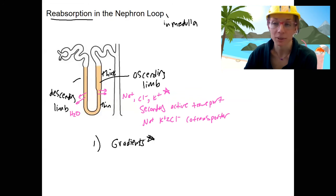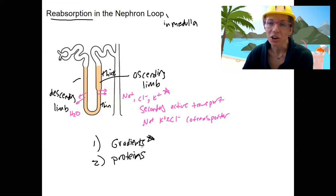So gradients are going to be big, they always have been. And number two, what proteins are there? Especially if you don't have a gradient, you need a protein to pump.